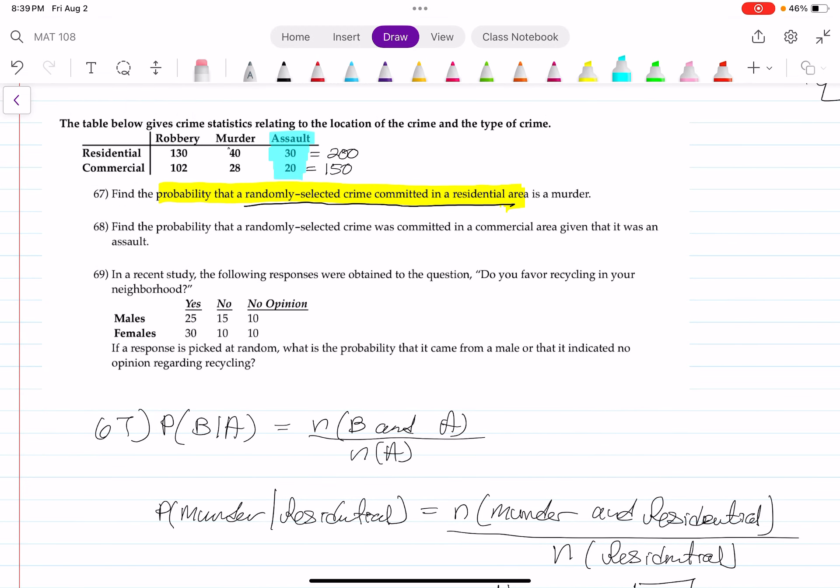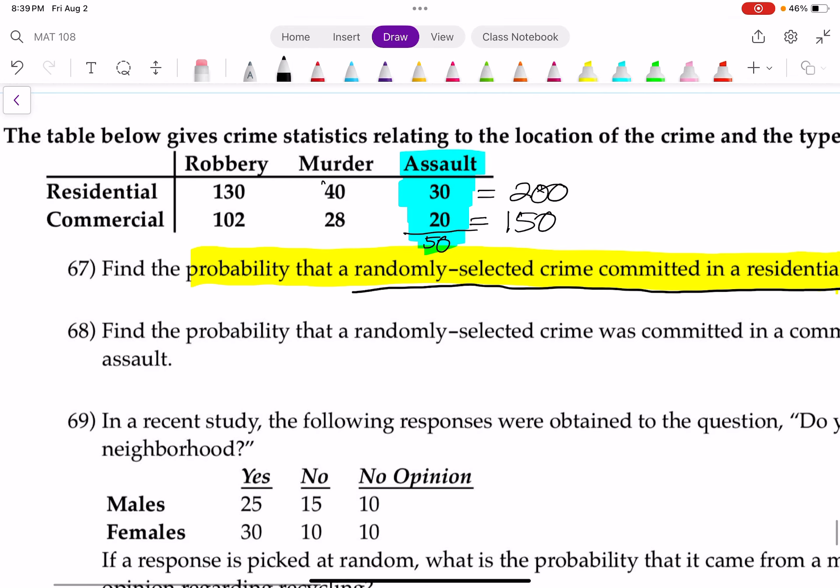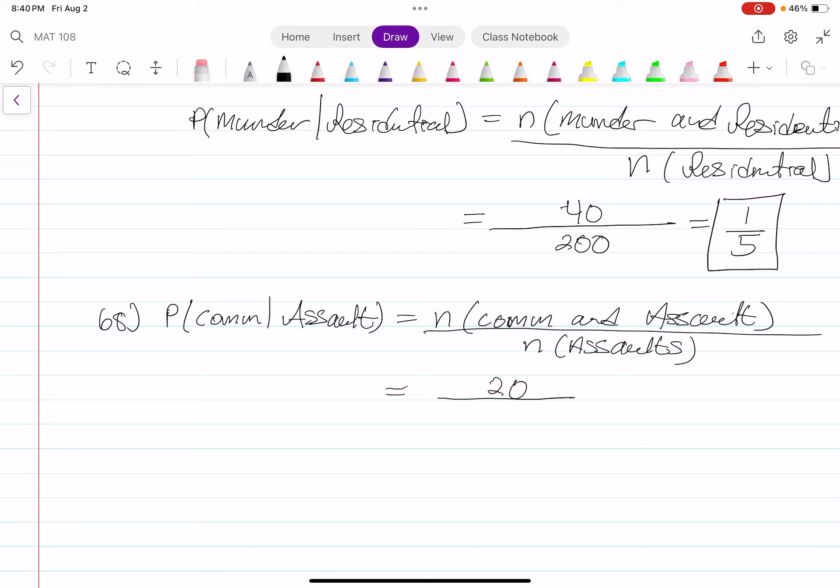So the condition is the crime must be an assault. Here is assault. There are a total of 50 crimes that are considered to be an assault. And out of the 50 crimes that are considered to be an assault, 20 of those crimes happened in a commercial area. So the probability that a crime happened in a commercial area, given that we're focusing on assault specifically, is 20 out of 50. So that's 20 out of 50. And that reduces to the fraction of two-fifths. Two-fifths of assaults happen in commercial areas.